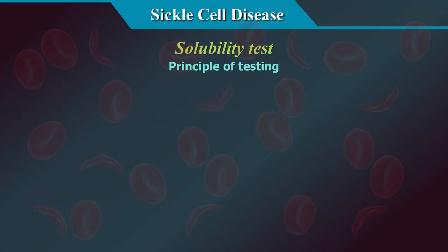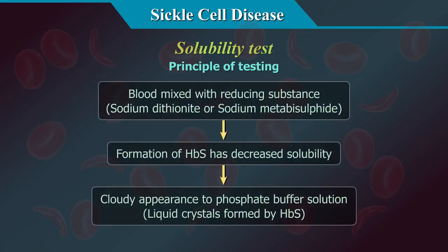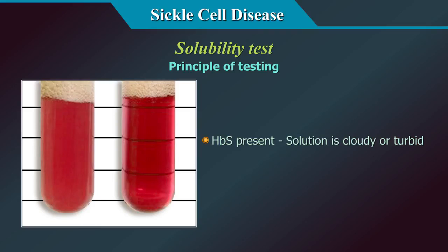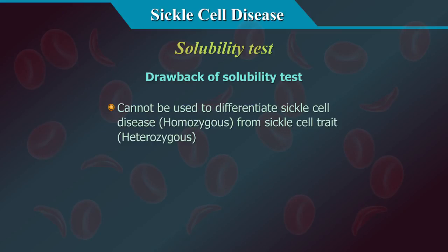The solubility test is the most common screening test for sickle cell disease or presence of HBS. It is based on the decreased solubility of deoxygenated HBS when combined with a reducing agent such as sodium dithionite or sodium metabisulphite in a phosphate buffer solution. Haemoglobin S forms liquid crystals and gives a cloudy appearance to the phosphate buffer solution. If HBS is present, the solution has a cloudy or turbid appearance; if HBS is not present, the solution will appear transparent. Note that the solubility test cannot differentiate sickle cell disease (homozygous) from sickle cell trait (heterozygous).